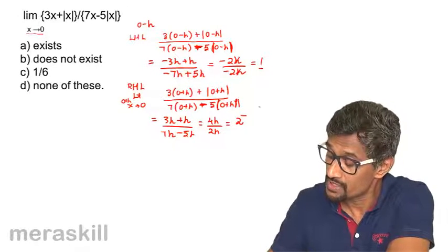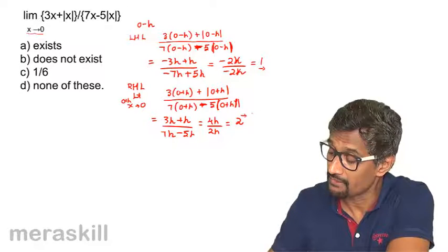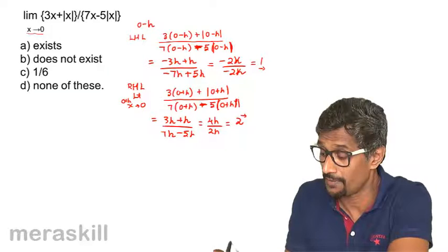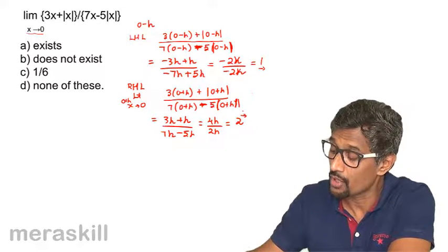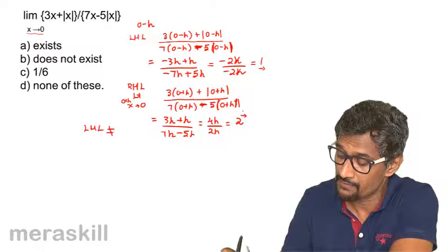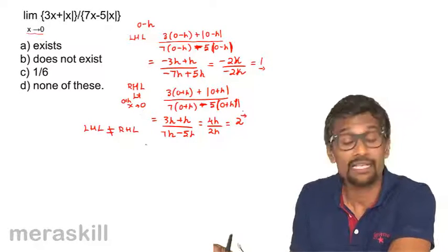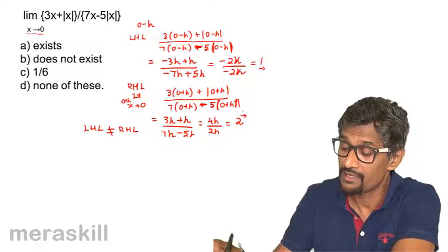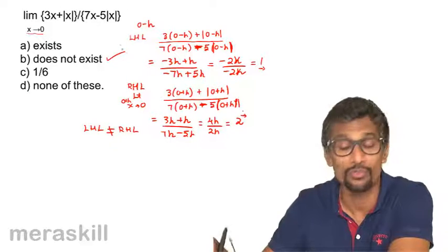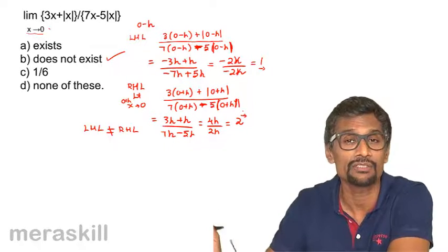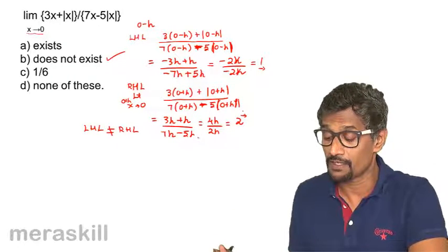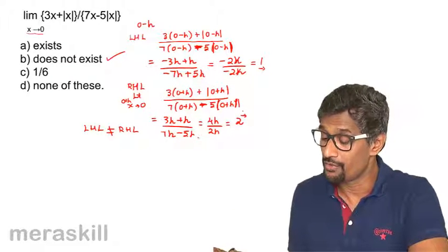These two values, 1 and 2, are not equal at all. For any smallest possible value of h, the left-hand limit and right-hand limit are not equal. That means the left-hand limit is definitely not equal to the right-hand limit when x is 0. So we say such a limit does not exist, which also means that the function is discontinuous at x equal to 0.